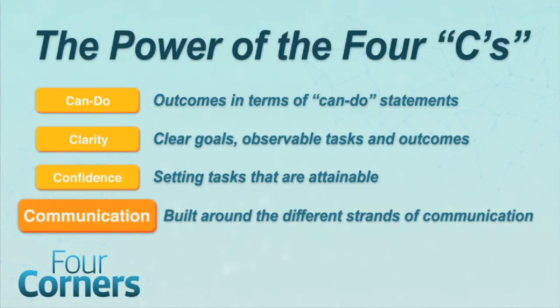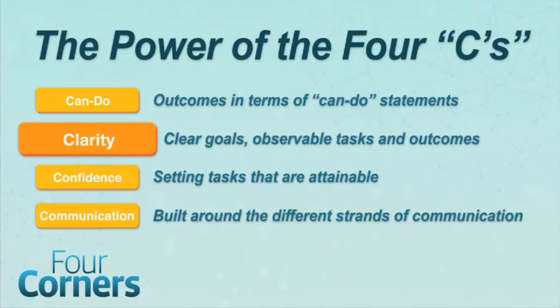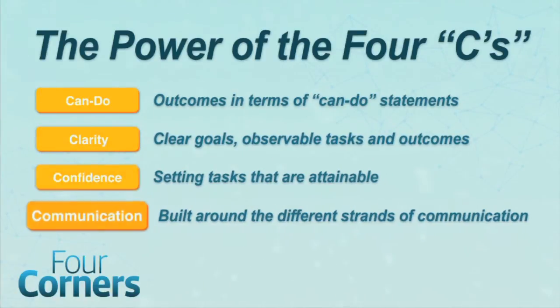The last of the four C's is Communication, and that's what the course is all about. It's built around the different strands of communication, the different building blocks of communication, and so throughout the course students' communicative capacity and communicative competence is developing. So those are the four C's of the Four Corners course: Can Do, Clarity, Confidence, and Communication.